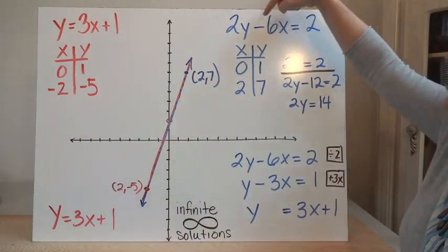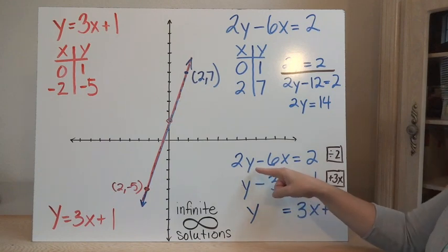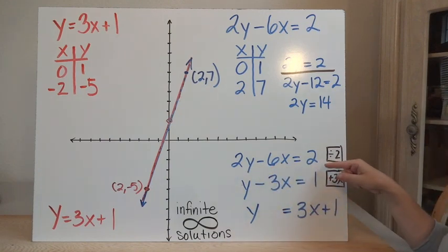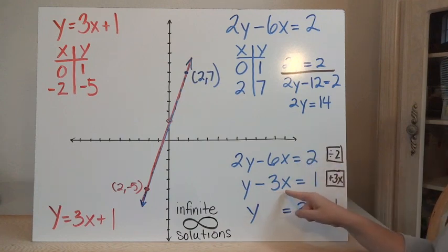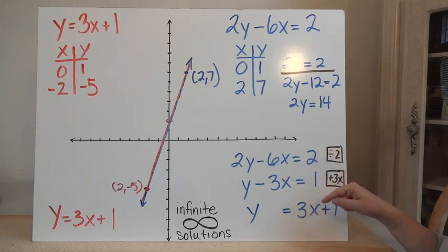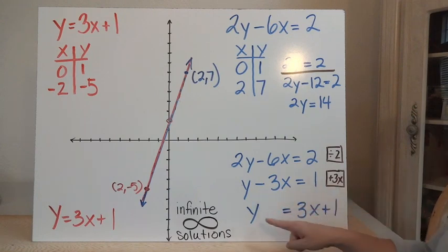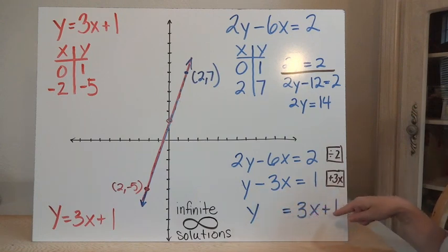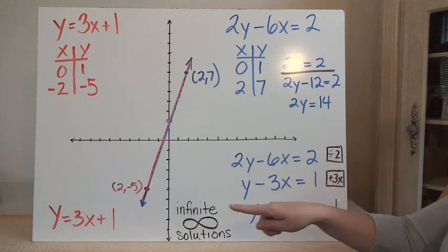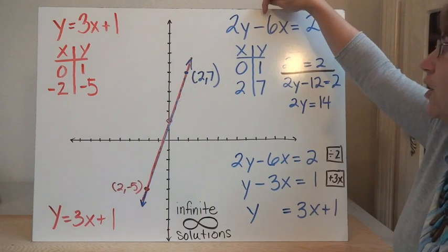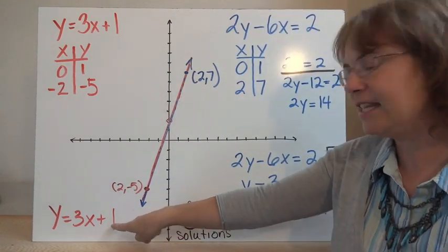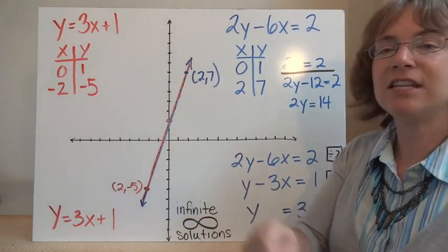Let's see algebraically why. If we take 2y minus 6x equals 2 and divide everything by 2, we get y minus 3x equals 1. Adding 3x to both sides gives y equals 3x plus 1 — exactly the same as the first equation. So the second equation is really just twice the first equation, which means they are the same line with infinitely many solutions.